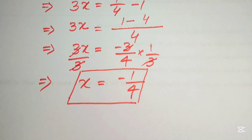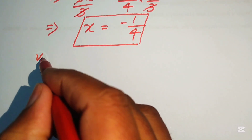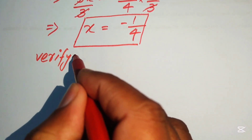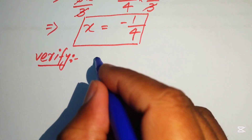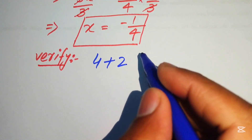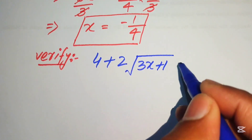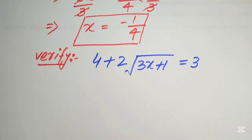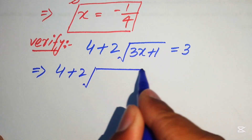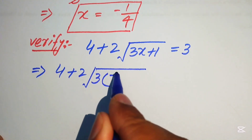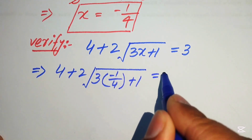Here we need to verify this value of x — is this value of x satisfied by the given equation or not? We copy down the given equation: 4 plus 2 into square root of 3x plus 1 equals to 3. We substitute the value of x, which is minus 1 over 4, on the left hand side, giving 4 plus 2 into square root of 3 times minus 1 over 4 plus 1 equals to 3.